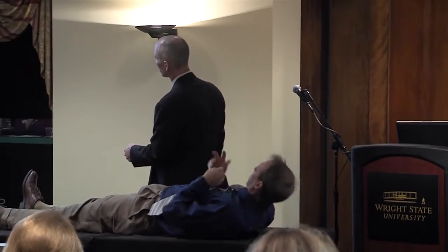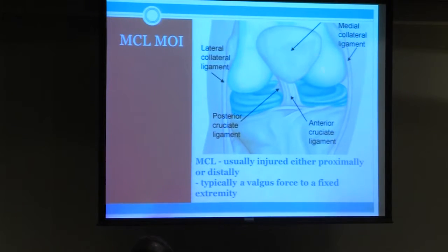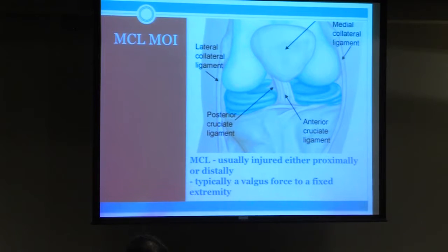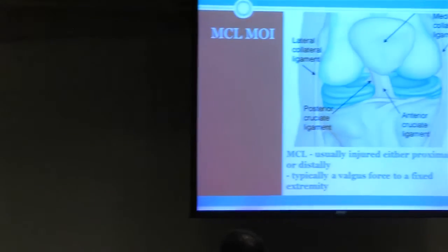The first thing we're going to talk about is MCL injury. The MCL is the ligament that runs proximal to distal along the medial side. They're usually injured in one of two places — either proximally or distally — rarely at the mid-substance. The history is usually a foot-planted, contact injury where they're hit on the lateral side, causing a tear.